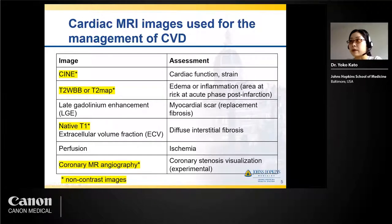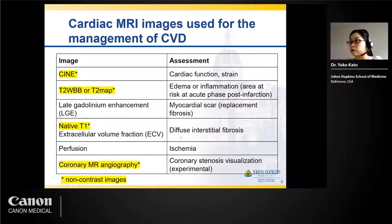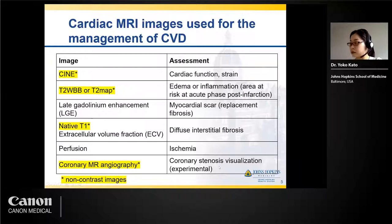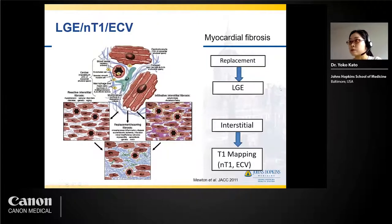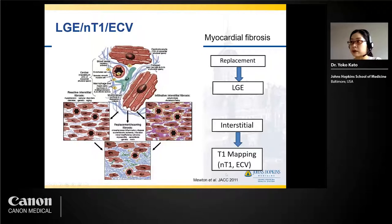This table presents the cardiac MRI images used for the management of CVD, with non-contrast images highlighted in yellow. CINE imaging is used to assess cardiac function and strain; T2-weighted or T2-map images assess edema or inflammation; LGE — late gadolinium enhancement — assesses myocardial scar, which we call replacement fibrosis. Native T1 and ECV are used to assess diffuse interstitial fibrosis. Perfusion imaging assesses ischemic burden, and coronary MR angiography, which is somewhat experimental, is used for coronary stenosis assessment.